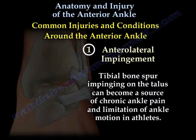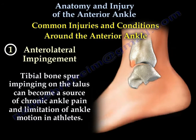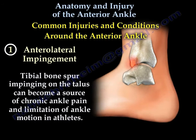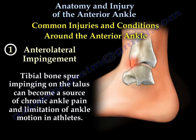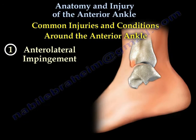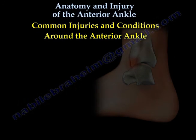A tibial bone spur impinging on the talus can become a source of chronic ankle pain and limitation of ankle motion in athletes. This is an osseous or bony spur on the anterior lip of the tibia that contacts the talus during dorsiflexion.